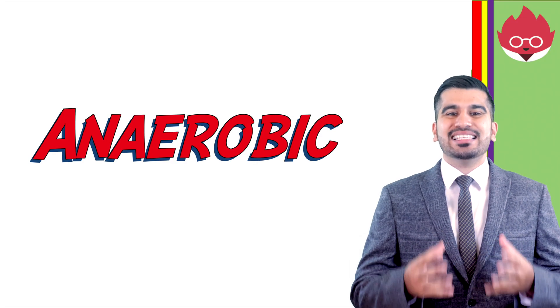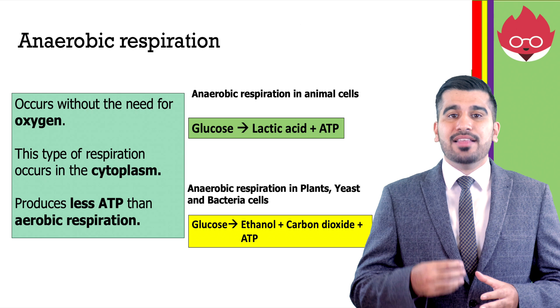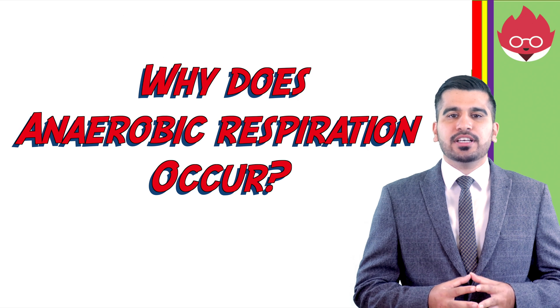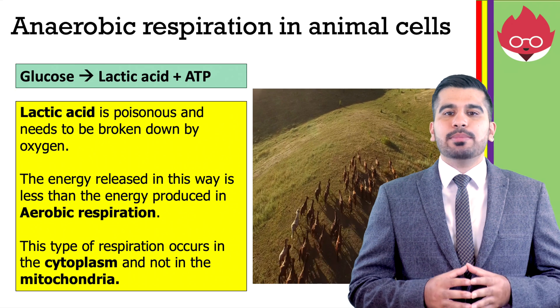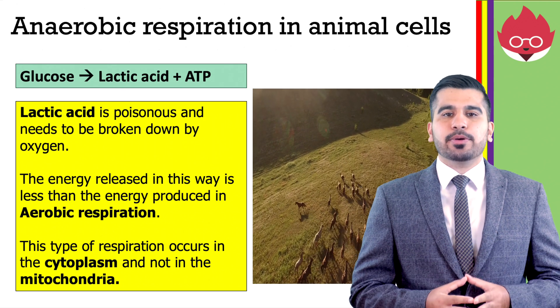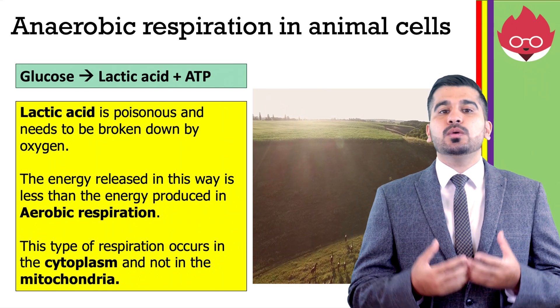Our second type of respiration is anaerobic. This type of reaction happens without oxygen. It happens in the cytoplasm, produces less ATP, and is therefore an inefficient way of transferring energy from glucose. In humans, if you start exercising vigorously, you reach a point where you're not taking in enough oxygen as fast as you need it to break down glucose. At this point, cells can respire without oxygen to meet ATP needs. In animals, glucose is broken down to produce lactic acid and ATP. Lactic acid is poisonous and needs to be broken down by oxygen. The amount of oxygen required to remove lactic acid and replace the body's oxygen reserves is called the oxygen debt.